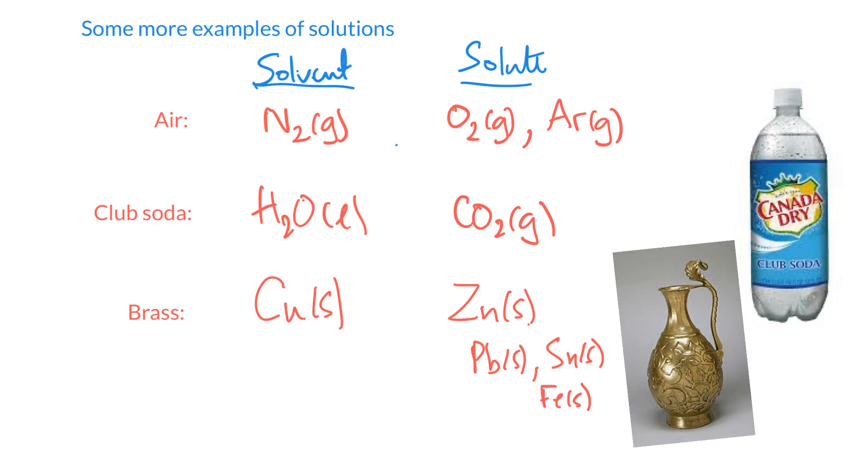So these are all solutions. They're homogeneous mixtures. So there's multiple components, but they're all dissolved neatly so that when you look at it, there's not like a lumpy place where there's a little more zinc and a little more lead. They're perfectly distributed throughout the entire solution.